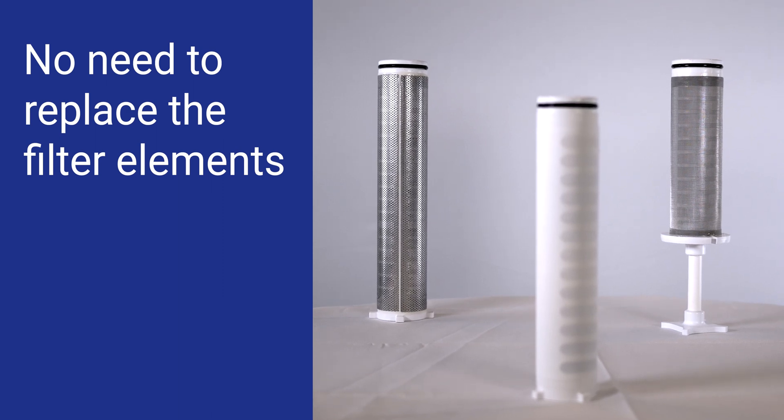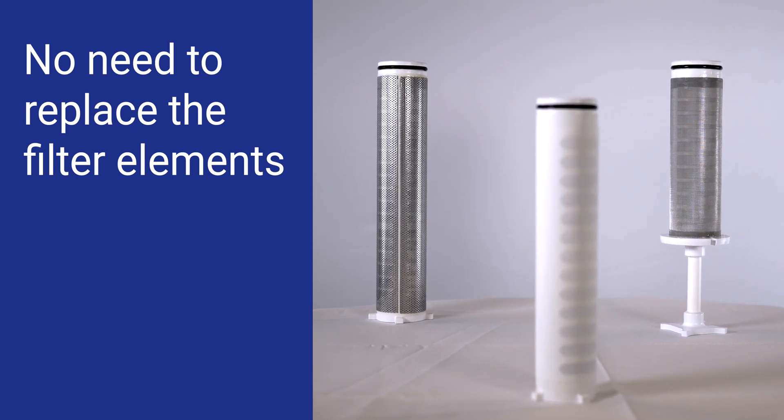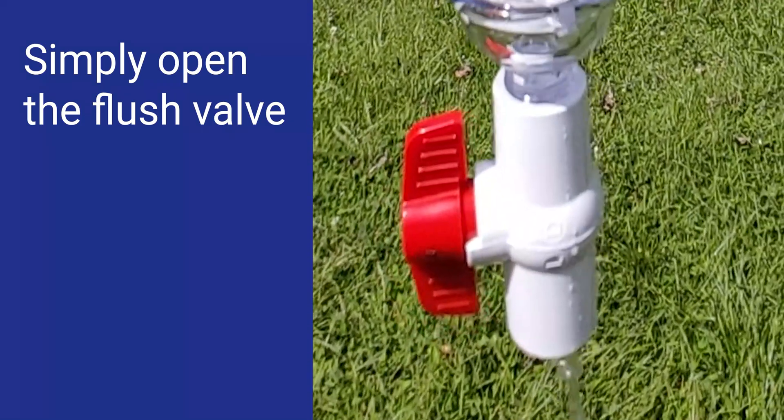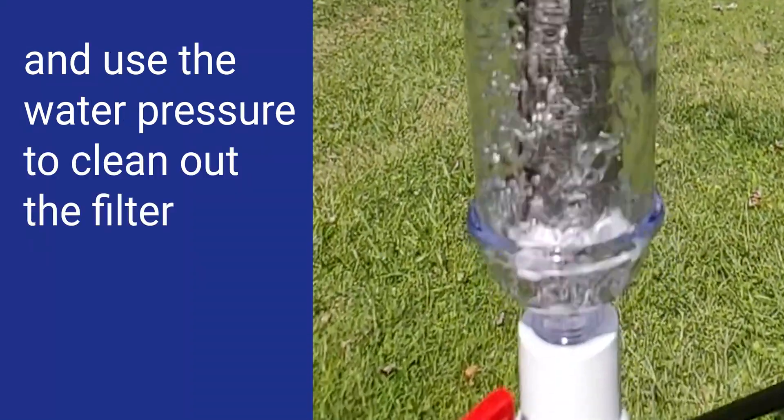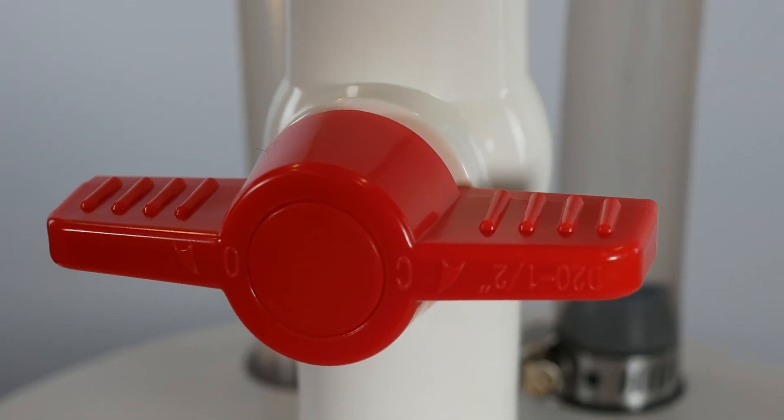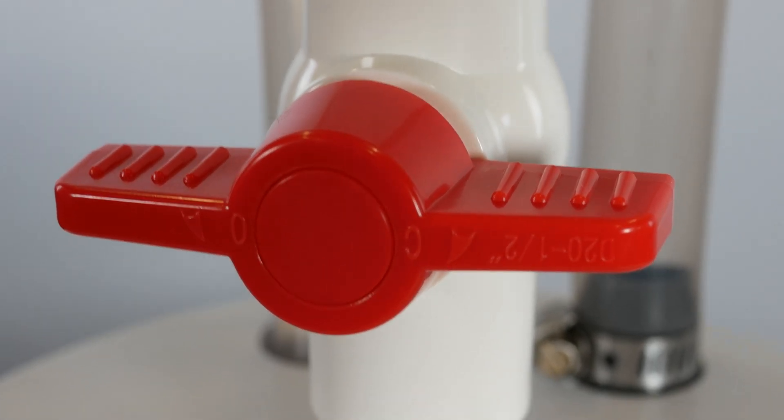Instead of removing the filter element when it gets full of particles, we can just turn this water valve here and use the water pressure to flush out the system. And that water is going to push out all of the particles through the bottom of the cover and clean the filter element in the process. So once you flush your system, you can close the valve and you're done. And you can keep your filter without having to replace the element.